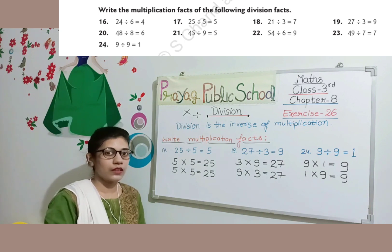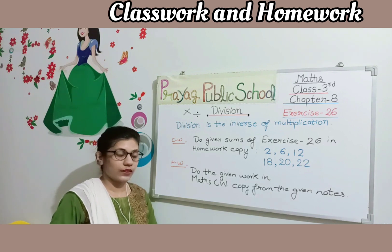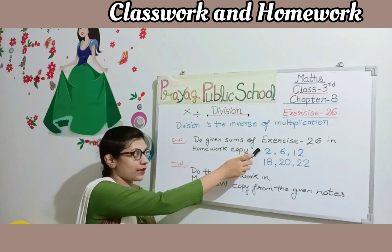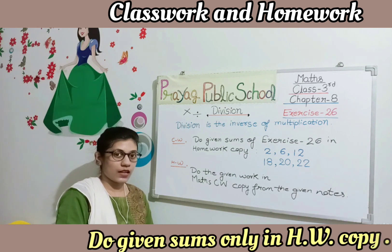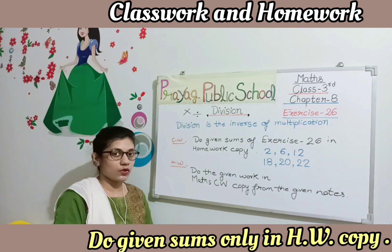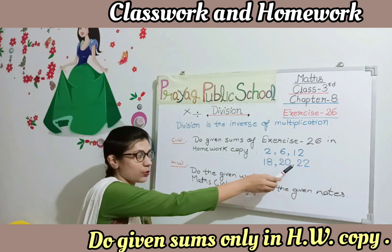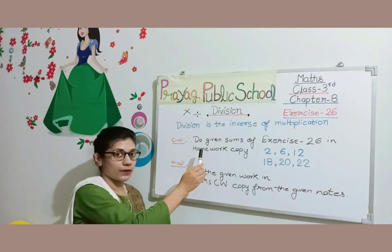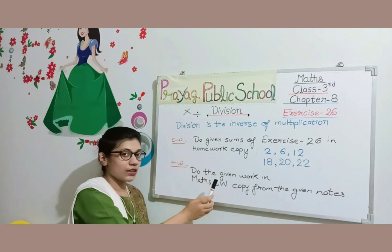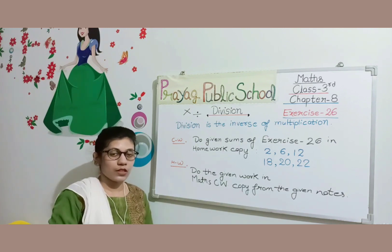Students, it is time for classwork and homework. Today's classwork is to do the given sums of Exercise 26 in your homework copy. Write the date, chapter number, chapter name, and then start your work neat and clean. Solve question numbers 2, 6, 12, 18, 20, and 22 — total 6 questions. Your homework is to do the given work in your maths classwork copy from the given notes. That's all for today, thank you.